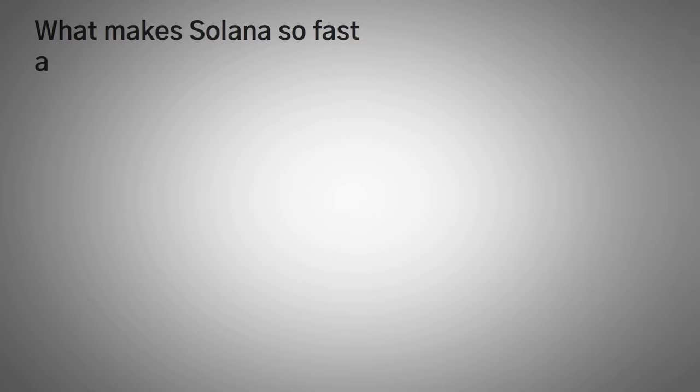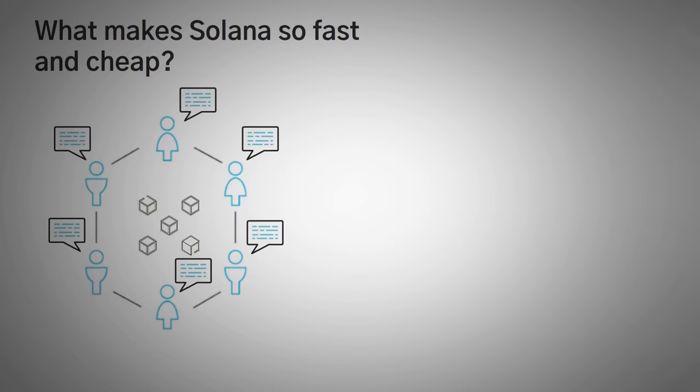The first thing that we must explain is their consensus mechanism, which is a fancy way of saying how everyone agrees what the blockchain should be. Now, they don't use proof of work, and they don't really use proof of stake. Anatoly actually described a new system called proof of history in his whitepaper. It's basically proof of stake, but it adds in the special variable of time.